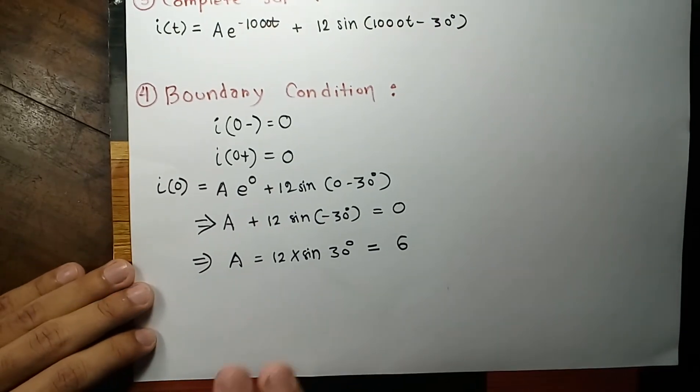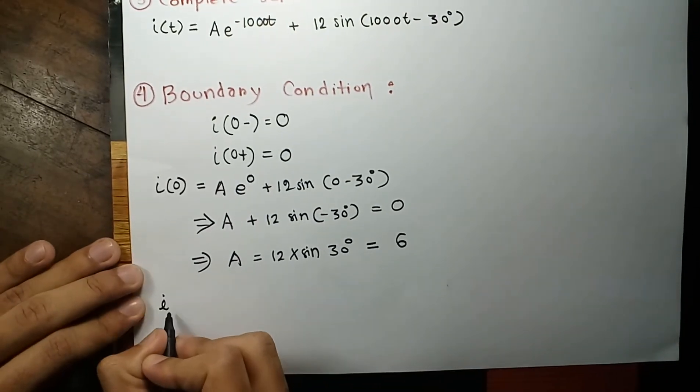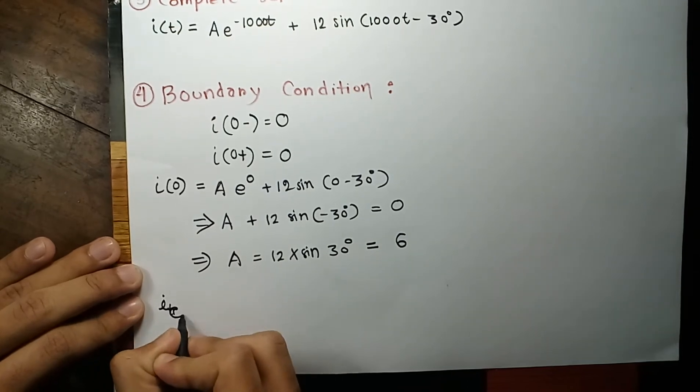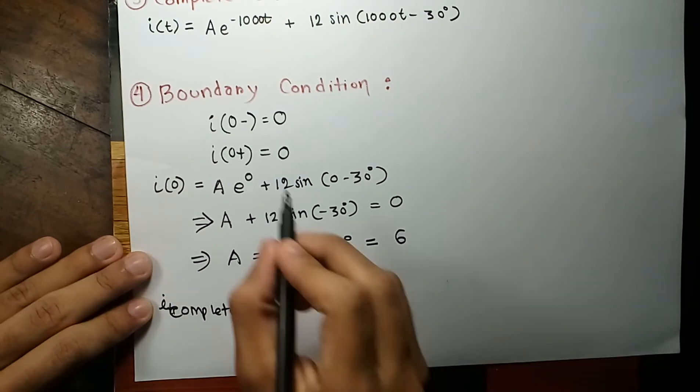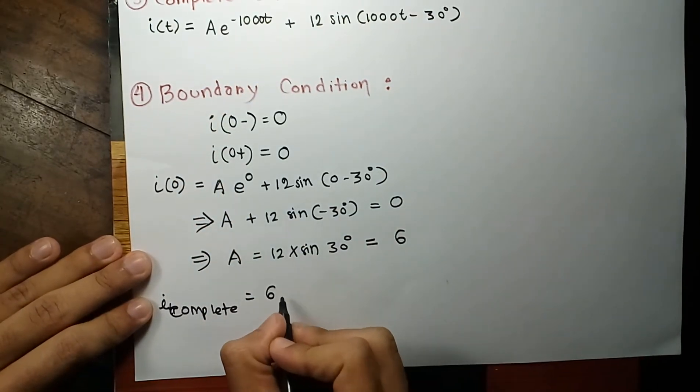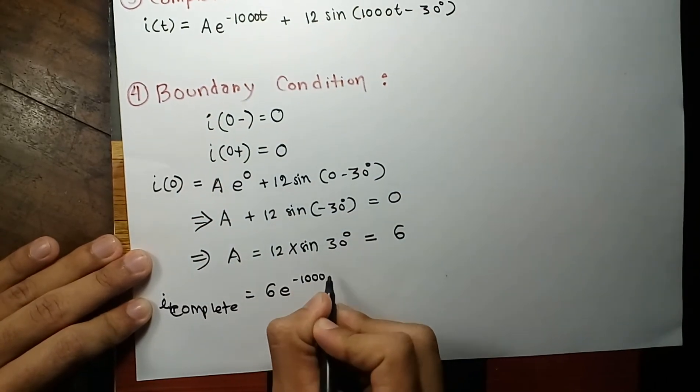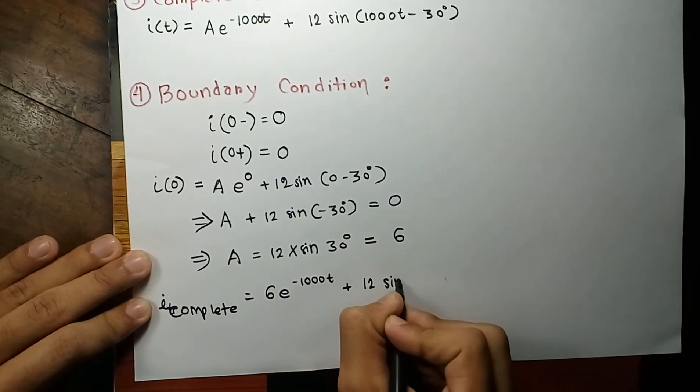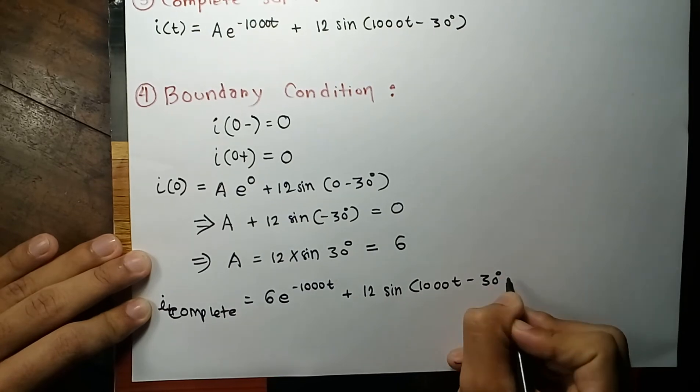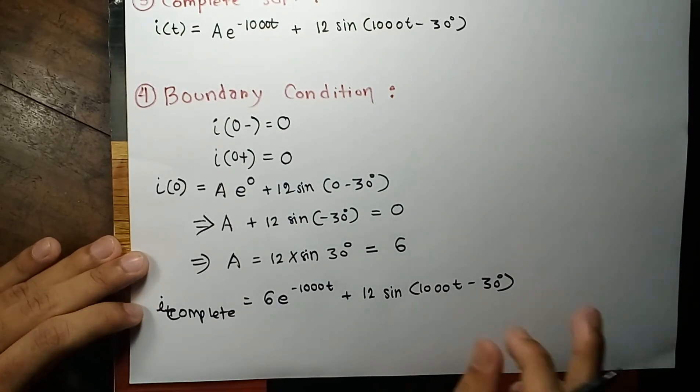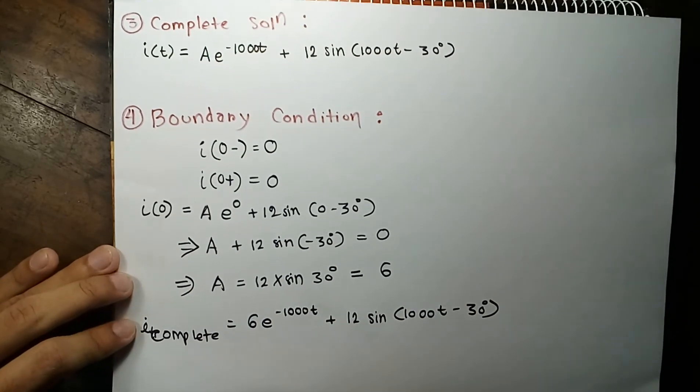So what will be our complete solution now? Our complete solution and answer to this problem will be A e to the power minus 1000 t. A's value is 6. 6 e to the power minus 1000 t plus 12 sine of 1000 t minus 30 degree. This will be our full complete solution and the answer to our problem.